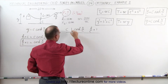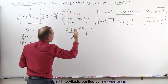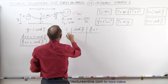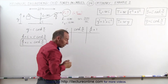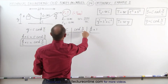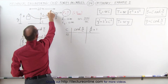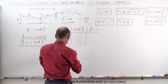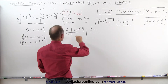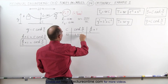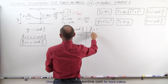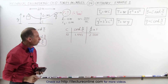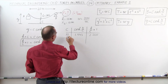Let's start with c equal to 10 — the same as the sag — and see if it works. Since x is half the total distance, x equals 10, so we compute the hyperbolic cosine of 10 over 10, which is cosh(1) = 1.543. Then h over c plus 1 is 10 over 10 plus 1 = 2. That doesn't match, so let's try c equals 9.